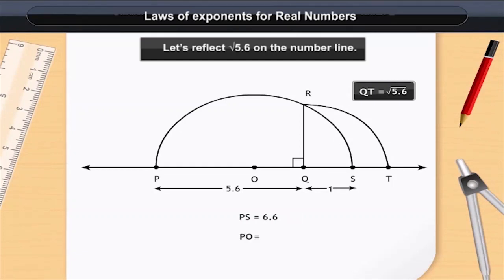PO is equal to half of PS which is 6.6 by 2 is equal to 3.3 units. We know that PO is equal to OR because it is the radius of the semicircle. Thus, OR is equal to 3.3 units.